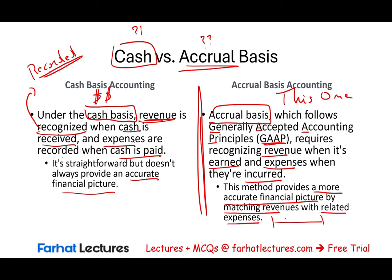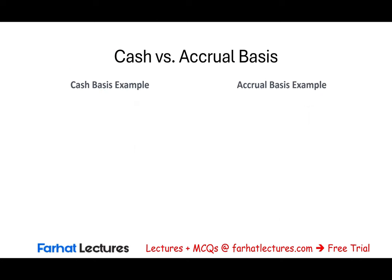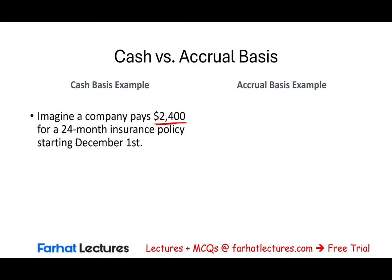Under accrual accounting, it doesn't matter whether you receive the money or not — as long as you did the work, you have revenue. And it doesn't matter whether you paid the expense or not — if the expense helped generate revenue, it's an expense. Let's look at an example: a company paid $2,400 for a 24-month insurance policy starting December 1st, Year 1.